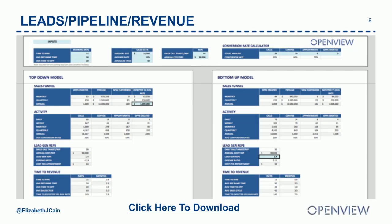If you know the basic activity levels of your team — someone can make 60 dials a day, send 40 emails — and you know conversion rates from dials to connects to appointments, you can model this out two ways. The first: I know I need to produce a million dollars in revenue through this team. If I know my activity levels and conversion rates, I can back into how many BDRs I'd need to hire to hit that number.